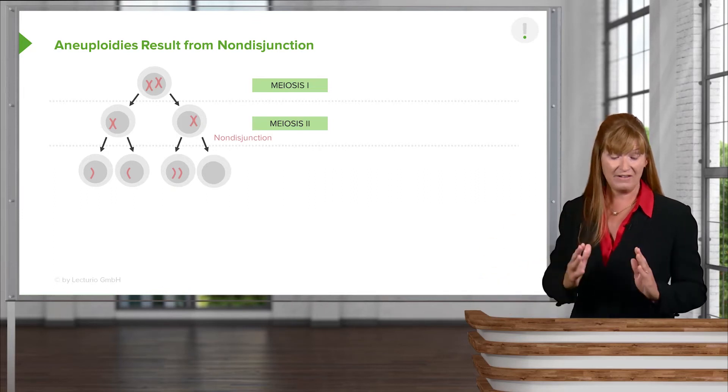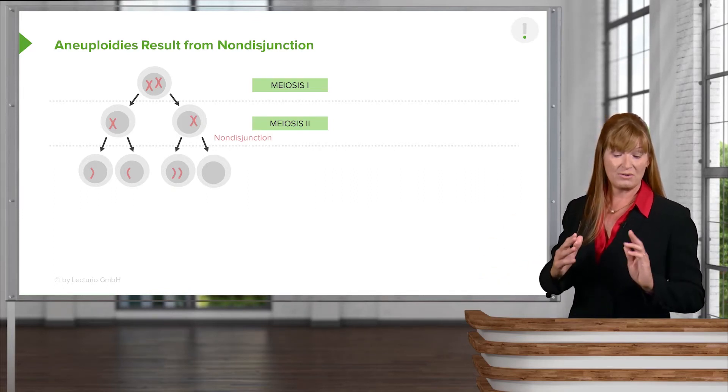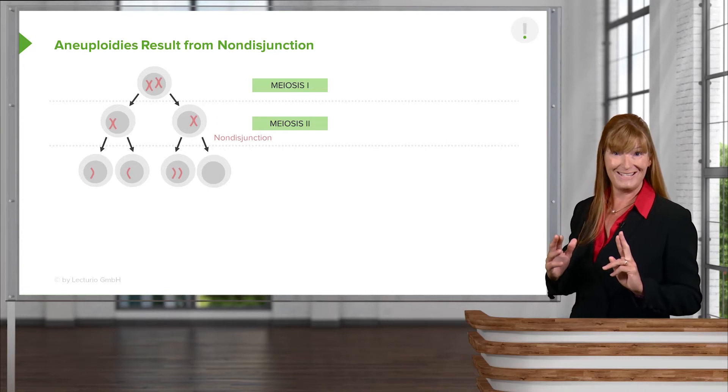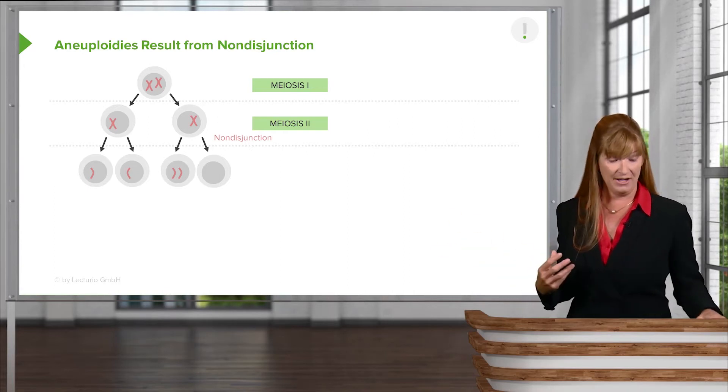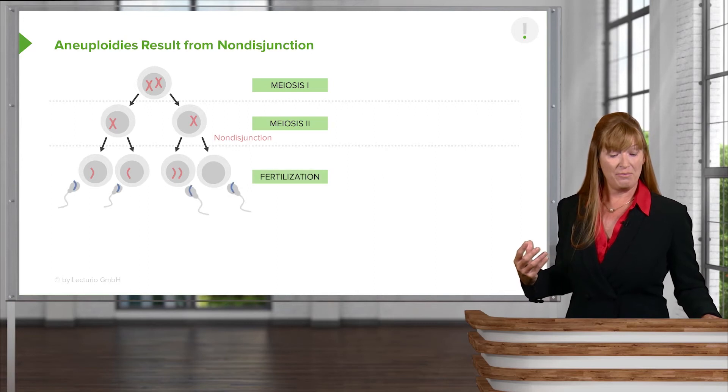Which results in one cell having two chromosomes, so it's actually two sister chromatids, and the other having none. And so the products of these, if they're fertilized, will end up in zygotes.